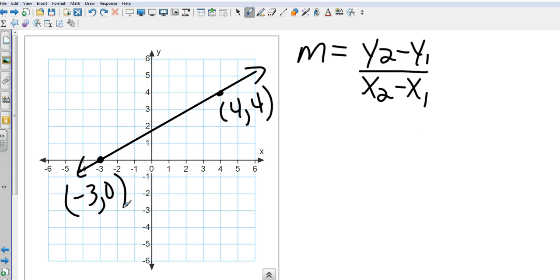So I could substitute those in. I'll use the negative 3, 0 as the first one, and the 4, 4 as the second one. And so my y2 is 4, my y1 is 0, my x2 is 4, and my x1 is negative 3. Watch that. Minus and minus. So that's going to be 4 over 7. Notice that's a positive slope, it is rising. We could tell that by looking at the line, it's rising from left to right. And so what's another way to do it?